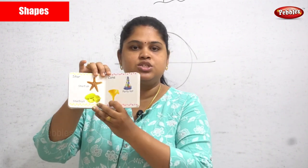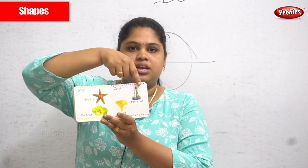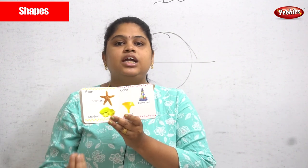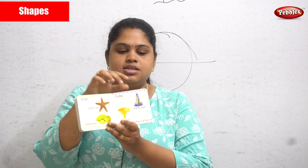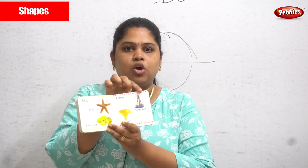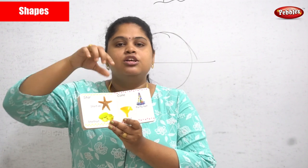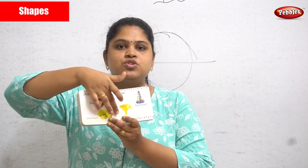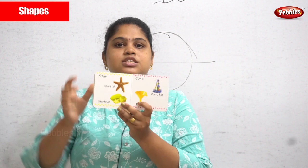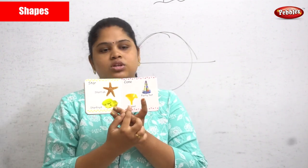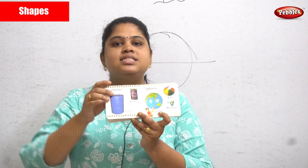The next shape is a cone. A party cone hat is in a cone shape. A funnel — which is used to pour water — also looks like a cone shape.